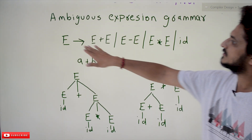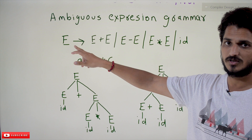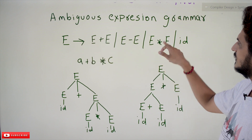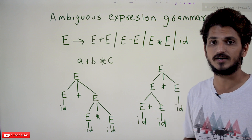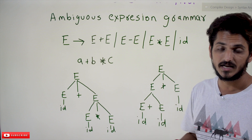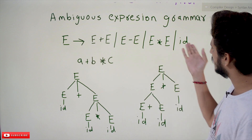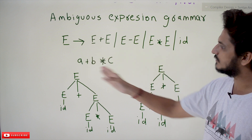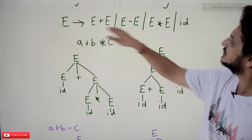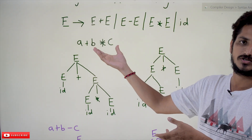This is the expression grammar written here: E tends to — E means expression. Expression tends to E plus E, or E minus E, or E star E, or ID. ID means identifier. In the lexical analysis phase, variables are called identifiers; identifiers are the tokens that are generated. So A is an identifier, B is an identifier, C is an identifier.